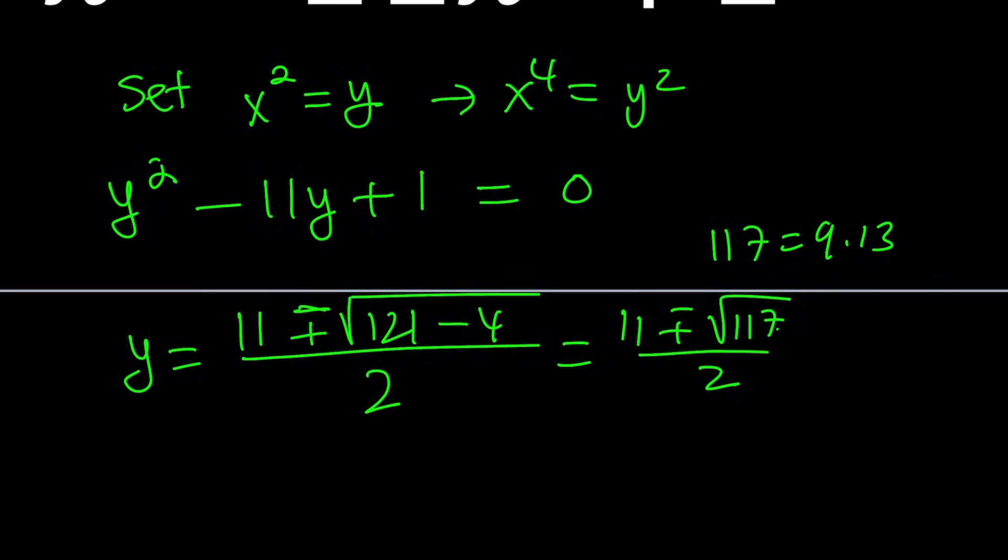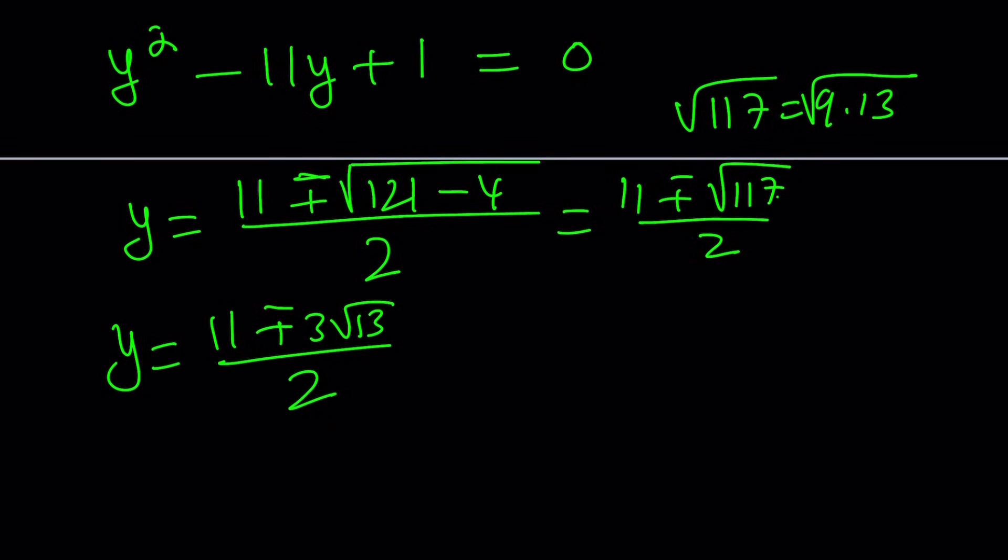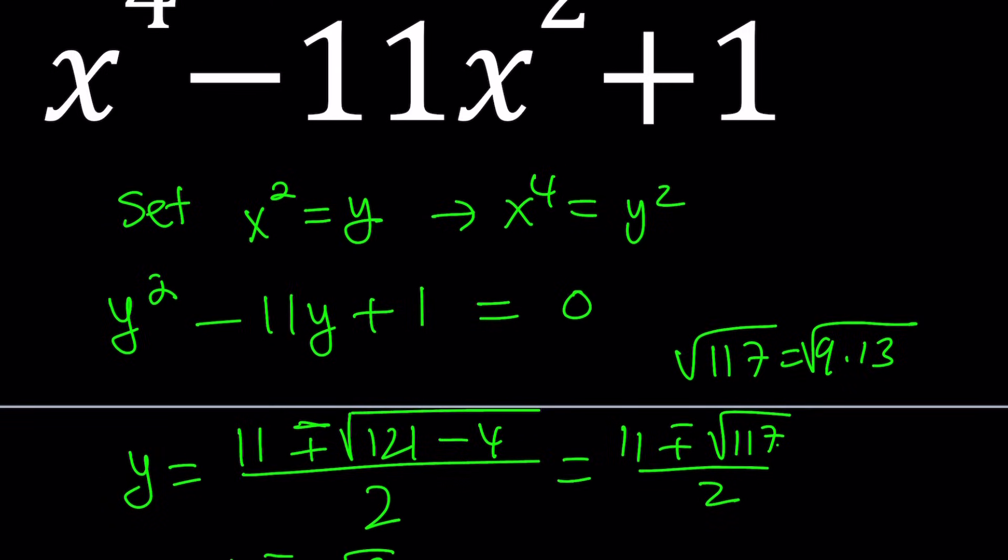So that means if you square root it, you're going to get 3 times root 13 from there. So y is 11 plus minus 3 multiplied by root 13, divided by 2. Such an irrational number, right? So do you think it's factorable into integer factors? No. But this is going to give us an idea, and that's what I find really interesting. So we found two solutions, right? And what is y, though? Y is x squared. So let's get back and back substitute.